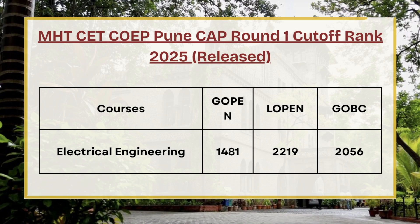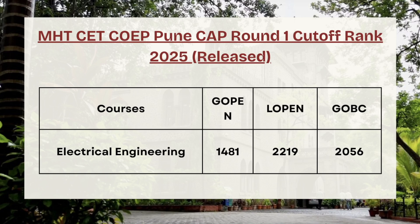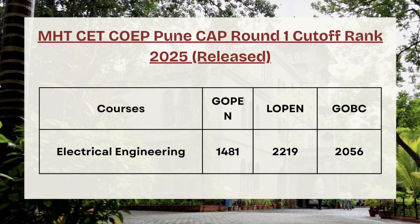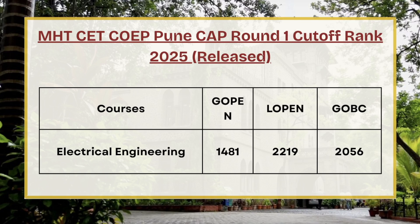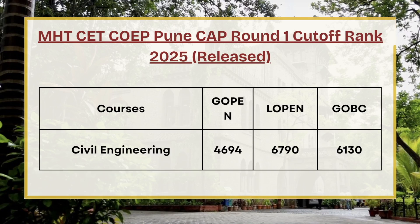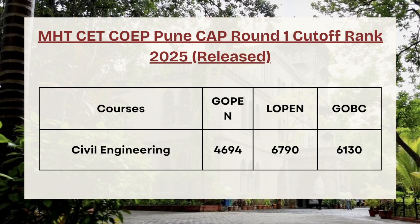Next in the list we have Electrical Engineering. For G-Open the cutoff rank is 1481, for L-Open the cutoff rank is 2219, and for GOVC the cutoff rank is 2056.